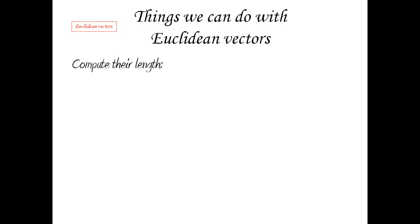What else can we do with them? Well, we can compute their length. The formula for length was basically a generalization of the dot product, so we can say that the length of a Euclidean vector is given by the square root of the sum of the squares of its components.